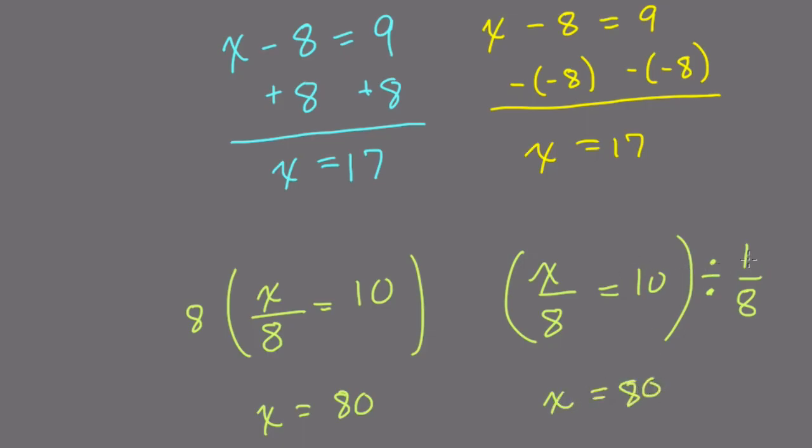10 divided by 1 eighth, well, 80 1 eighths are in 10. And x divided by 1 eighth, divided by 1 eighth, right, is 1. Because how many 1 eighths are in 1 eighth of an x? 1. So multiplication and division, of course, are very fluid. We could use either one, and so are addition and subtraction.